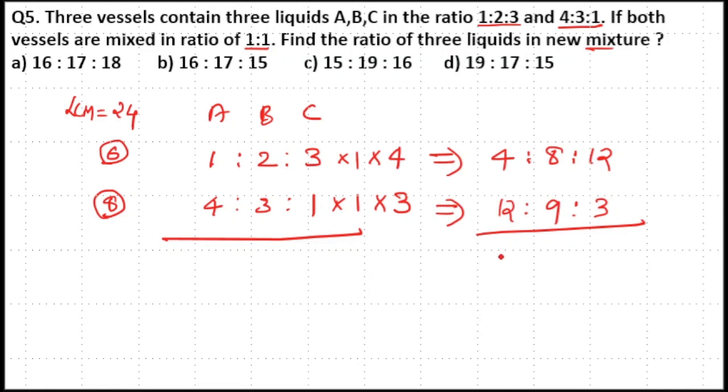Now you can add the ratios together. That is 12 plus 4 is 16, 8 plus 9 is 17, 12 plus 3 is 15. So 16 is to 17 is to 15. Option B is your answer.